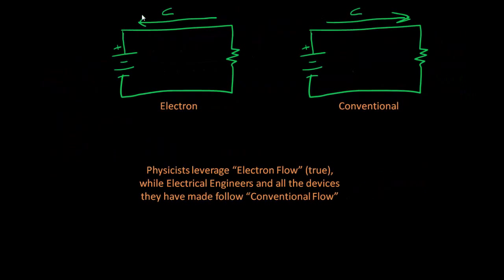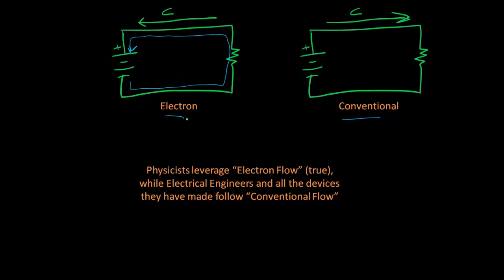One little topic I need to bring up: if you watch other videos on the internet, some of them will use what is called electron flow instead of what I would call conventional current flow. This is a theory in electrical engineering where basically the physicists would tell you that electrons actually leave the negative part of the battery and flow to the positive part of the energy source — and believe it or not, they are the correct ones.